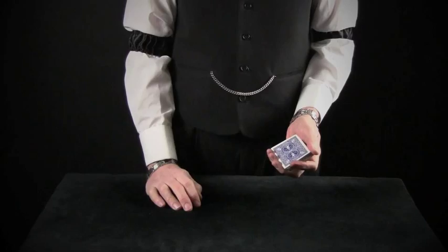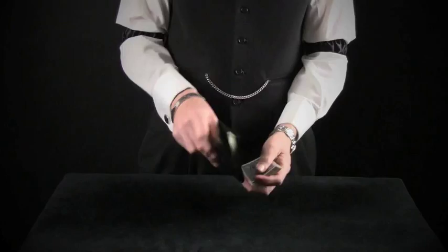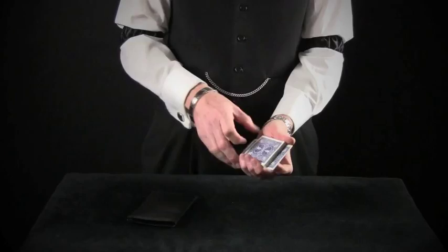A couple of reasons why. Number one, is you have to cover the entire deck. So the deck has to be covered. You've also got to get a break on the card in order to steal it away. So there's a lot of fumbling, and with a little practice, loading off the bottom, in my opinion, is far superior.